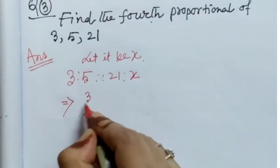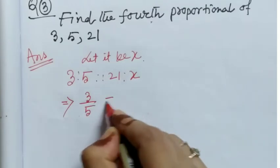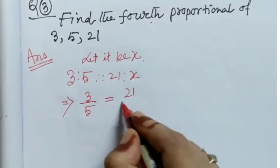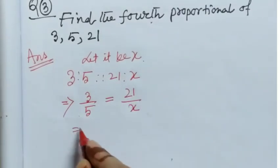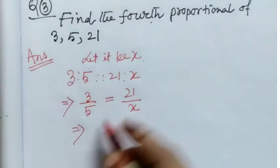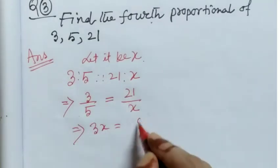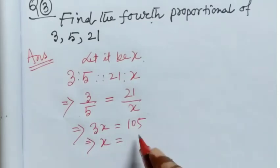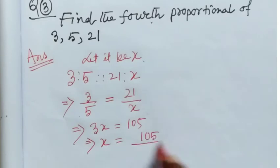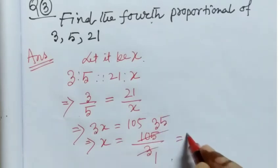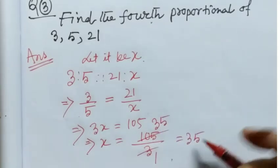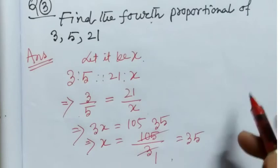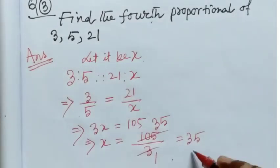Now we can get the value of x from here. Implies 3 divided by 5 is equal to 21 divided by x. Implies by cross multiplication 3x is equal to 105. Implies x is equal to 105 divided by 3, which equals 35, which is the 4th proportional to 3, 5, 21.